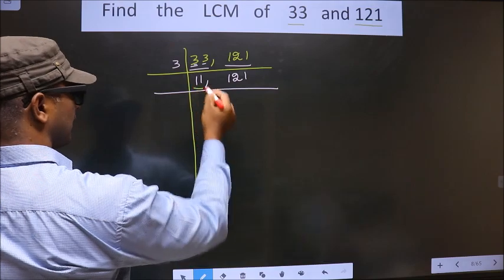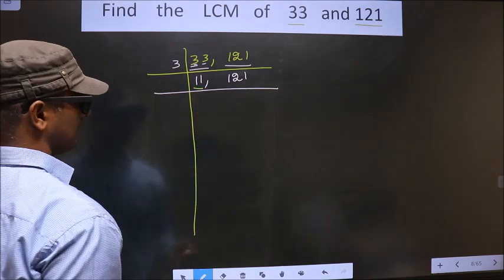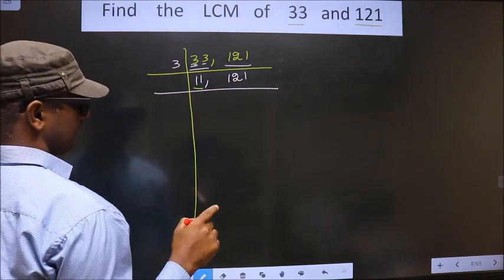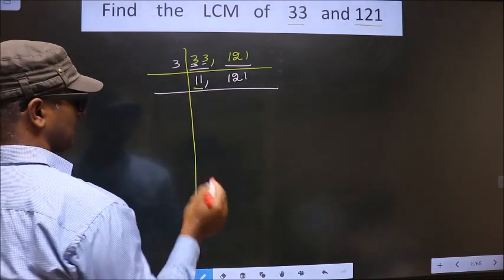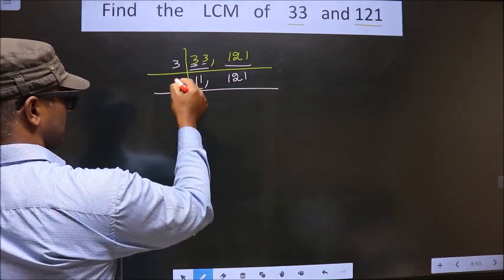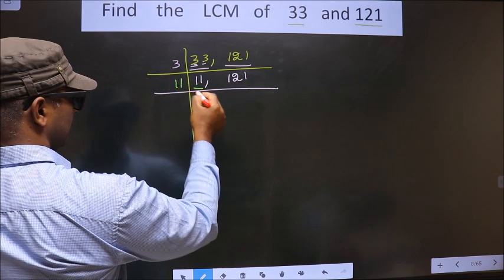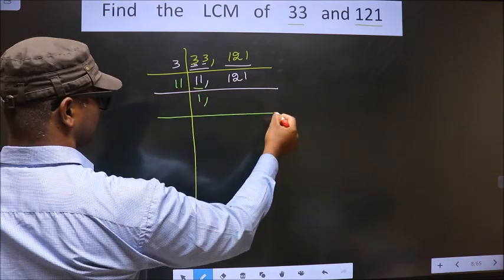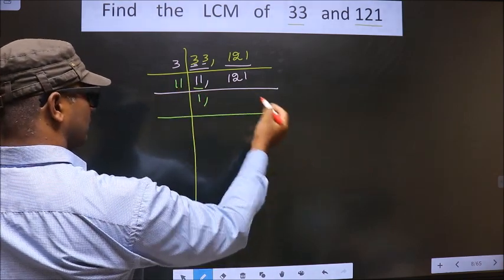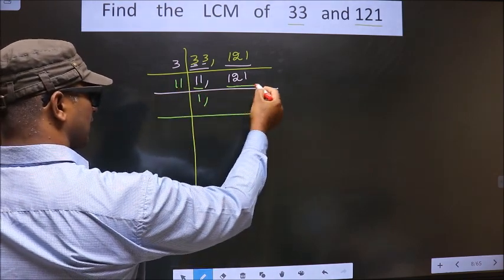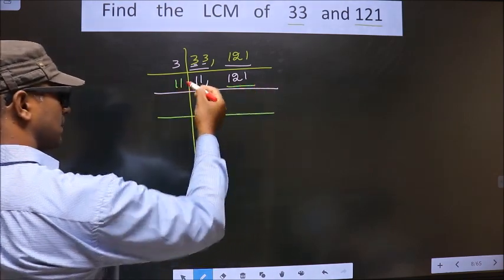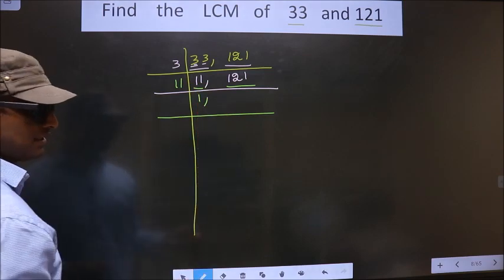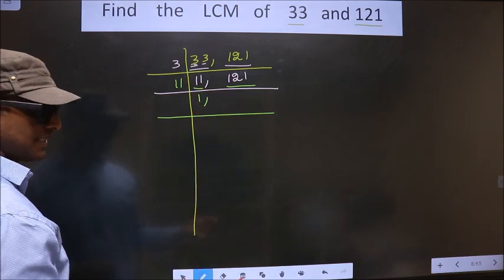Here we have 11. 11 is a prime number, so we take 11 once 11. Now, 121 is divisible by 11.